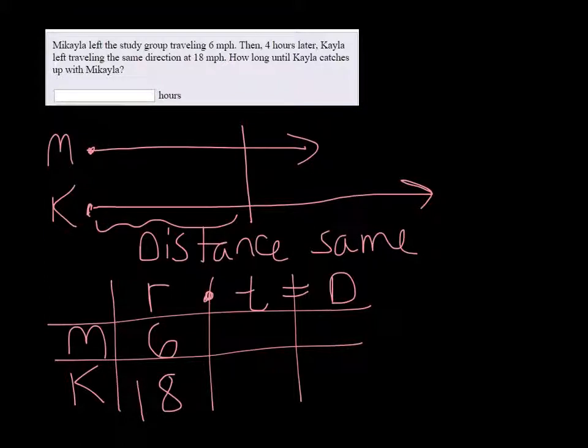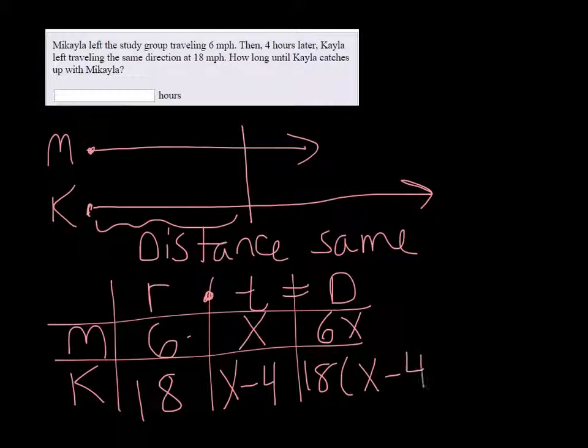We don't know how long it's taking Mikayla, so we're just going to call that x. But we know that Kayla left four hours later, so that's x minus four. To get d, you multiply 6 times x is 6x, and 18 times x minus 4 is 18 times x minus 4.